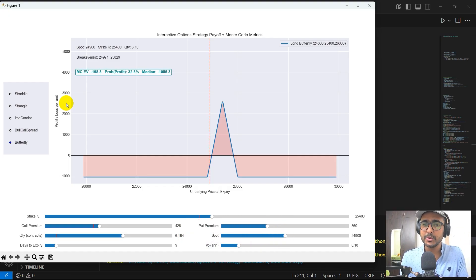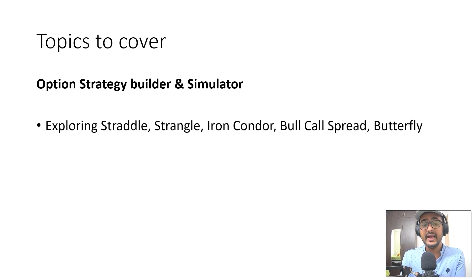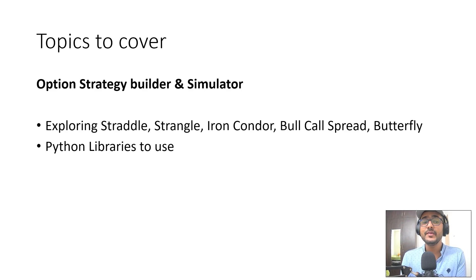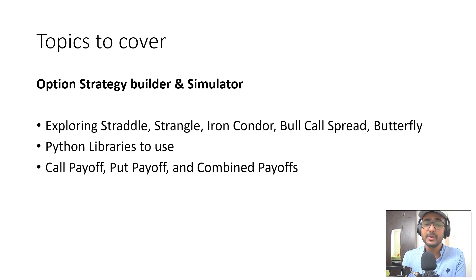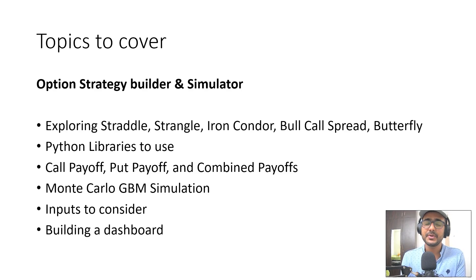Let's see what are the topics that we are going to cover in this video. This project is on the option strategy builder and simulator. First, we are going to explore straddle, strangle, iron condor, bull call spread, and butterfly option strategies. Then we'll see the Python libraries we are going to use. We'll understand the call and put payoffs and the combined payoff of these instruments. Then we'll talk about the Monte Carlo GBM simulation, the inputs we are going to consider, and finally build the entire dashboard.